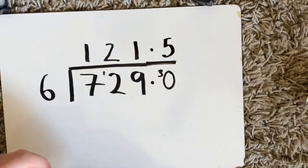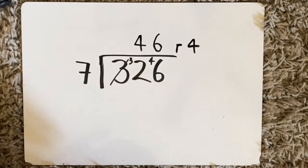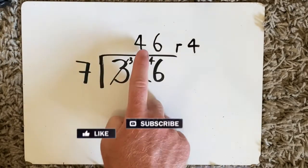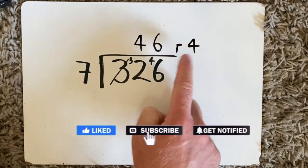Let's take a look at a harder example now. In this example I have 326 divided by 7. The answer was 46 remainder 4.